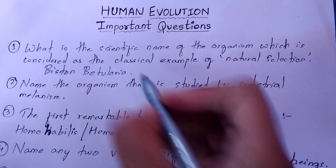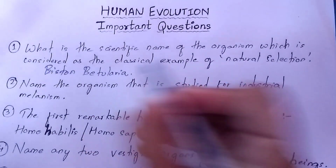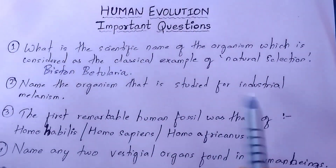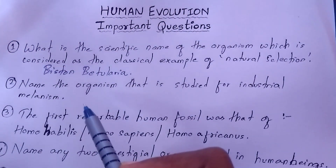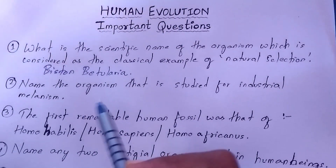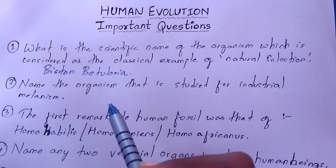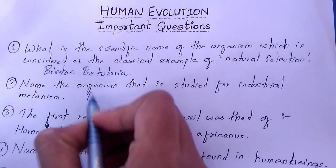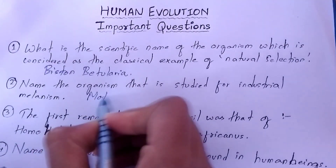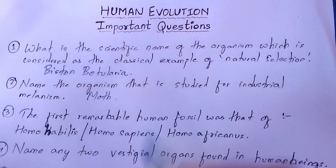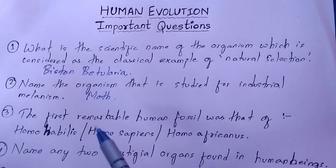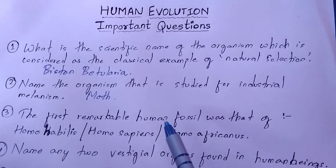The next question: name the organism that is studied for industrial melanism. This time it is not asking the scientific name, so you write that it is a moth — it is a kind of butterfly and it is known as a moth.